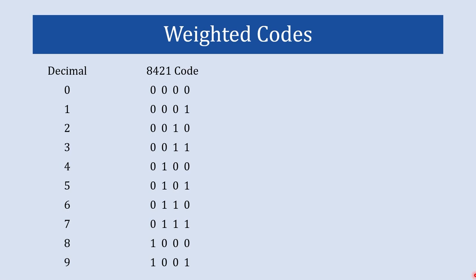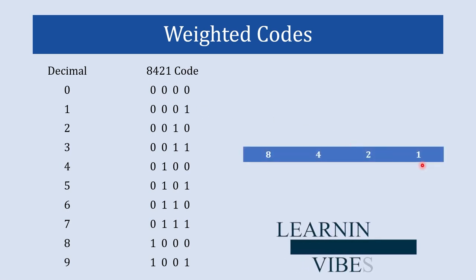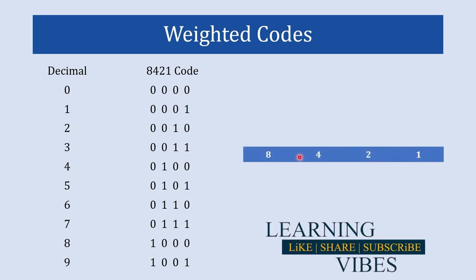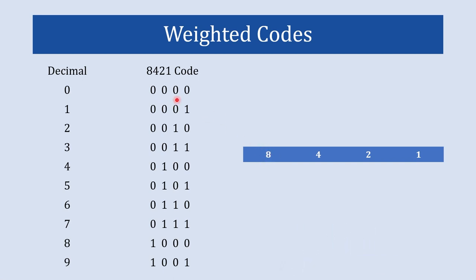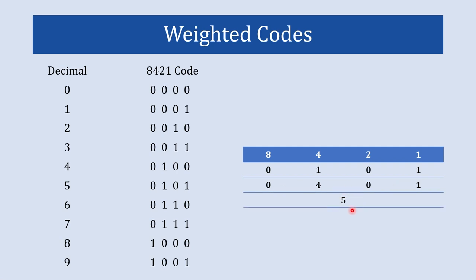In 8421 code, each position has a specific weight. The LSB has a weight of 1 whereas the MSB has a weight of 8. So this digit has weight of 8 and this digit has weight of 1. Let's take an example with the number 0101. Writing 0101: 0 into 8 is 0, 1 into 4 is 4, 0 into 2 is 0, and 1 into 1 is 1. If we add all these together we get 5 as our answer. So the BCD representation of 5 in 8421 code is 0101.